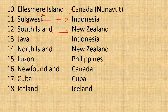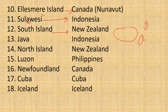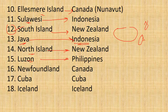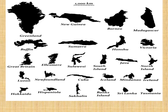South Island belongs to New Zealand. Looking at Australia, the South Island is the larger one and ranks 12th. Java is the most densely populated island and belongs to Indonesia. North Island of New Zealand, Luzon in the Philippines, Newfoundland of Canada, Cuba, and Iceland — these are among the 18 large islands of the world.